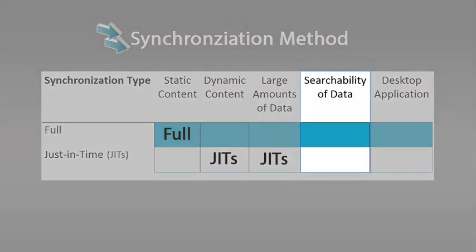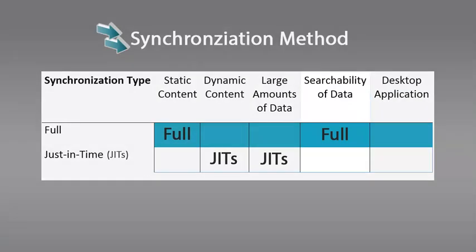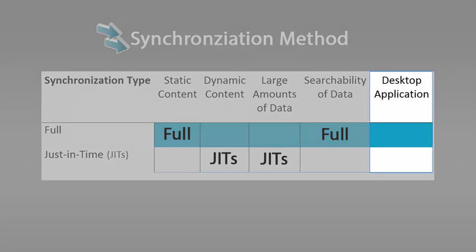Does the data need to be searchable? If so, you must do a full synchronization, because content can be indexed only after it is synchronized, and you cannot guarantee that all content will be synchronized when using only just-in-time synchronization. Does the content need to be available from the Filer desktop application? If it does, you must use full synchronization.